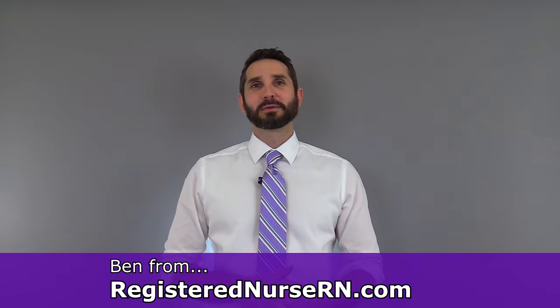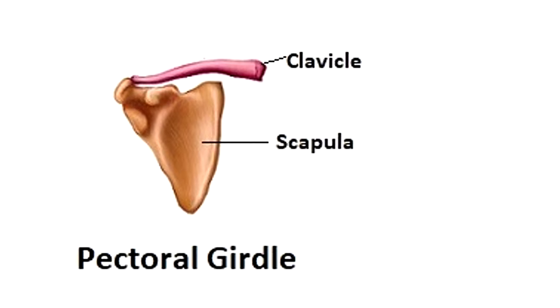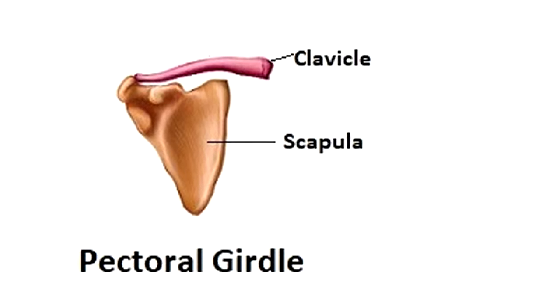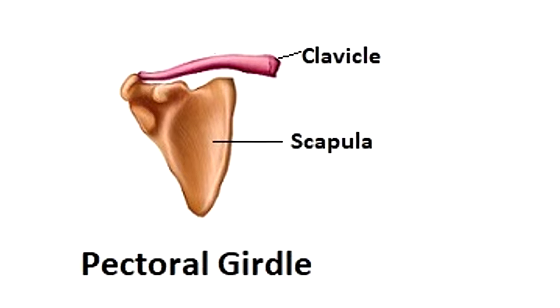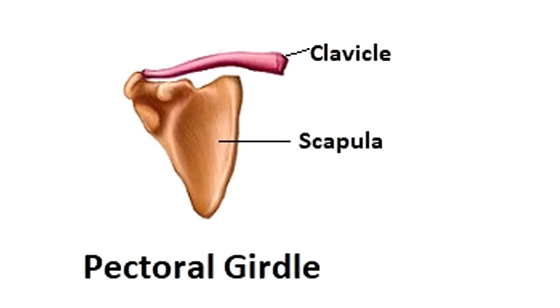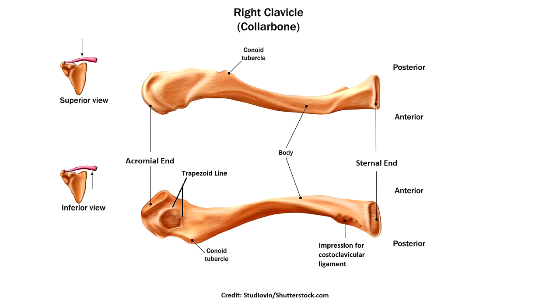In this anatomy lesson, I want to cover the clavicle and the scapula bones. These bones make up part of the appendicular skeleton and together they form the pectoral girdle, also called the shoulder girdle, which attaches the upper arm to the axial skeleton.